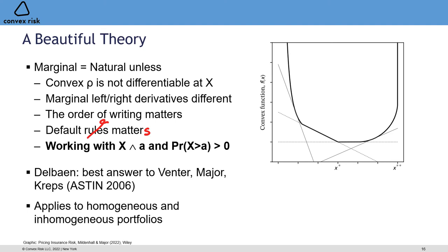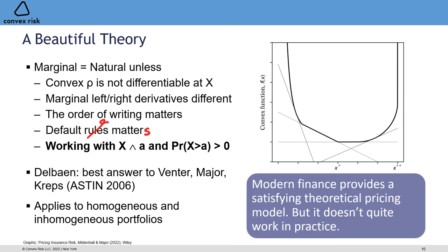I regard Delbaen's result as the best possible answer to the Venter-Major-Kreps paper on decomposition and marginal risk measures published in ASTIN in 2006. It gives the full answer and applies to both homogeneous and inhomogeneous portfolios — homogeneous asset-like portfolios were considered by Sinakou and Barnett (IME 2003), but this logic works for inhomogeneous portfolios as well. This is what I meant when I said modern finance provides a satisfying theoretical pricing model but doesn't quite work in practice: in practice you're always dealing with limited liability and distributions with flat spots, so you have to make a choice about a function that's not actually differentiable.